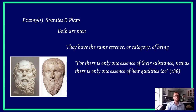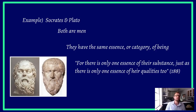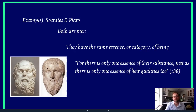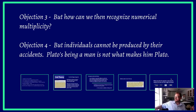Here's a refutation against that reply: a contradiction is a contradiction — surely forms attached to the same thing at exactly the same time no longer stand in opposition to one another. Something cannot be contrary simultaneously, otherwise it's a contradiction. Take Socrates and Plato — both are men, both participate in the same essence or form of humanness. There is only one essence of their substance, just as there is only one essence of their qualities. This brings us to the third objection: how can we recognize numerical multiplicity?